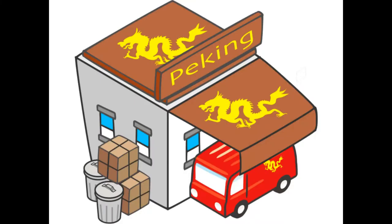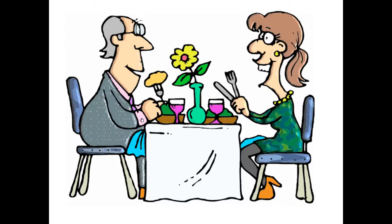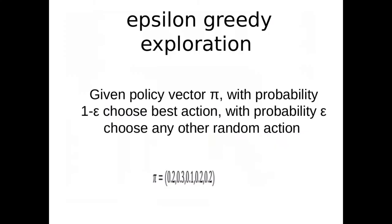Biological neural networks are optimizing a trade-off between exploration and exploitation. Exploitation means you perform an action you know will get a positive reward, like going to your favorite restaurant. Exploration means you try something new, which most likely doesn't return a high reward, but with a low chance returns an even higher reward — like going to a new restaurant which turns out to be even better than your favorite.